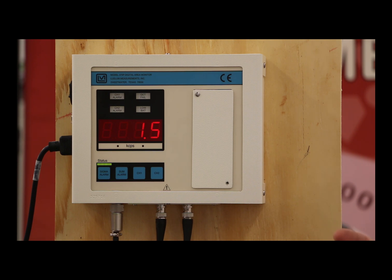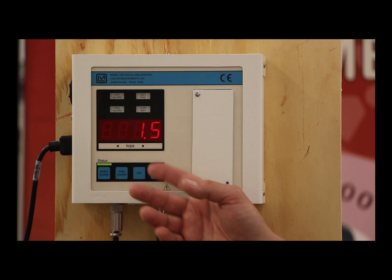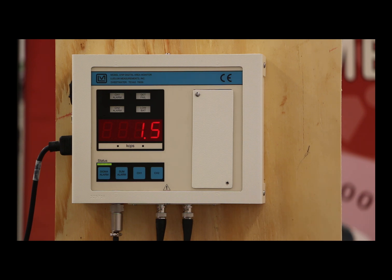The second alarm that we have is called the sigma alarm. Sigma is based on background. One sigma is the square root of the background. So right now, since we don't have sources around, really the square root of 1,500 counts per second would be equivalent to one sigma. That's going to be on the order of 25 or something along those lines.